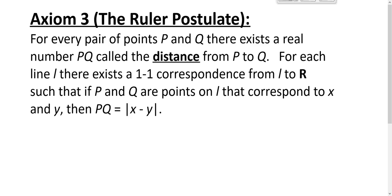We have two axioms down: the existence axiom and the incidence axiom — there is more than one point in the geometry, and every two points determine a line. So we should probably talk about lines.